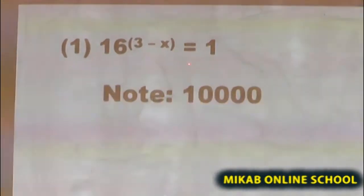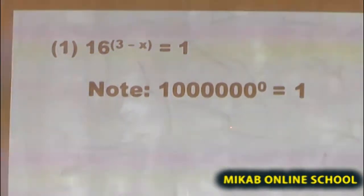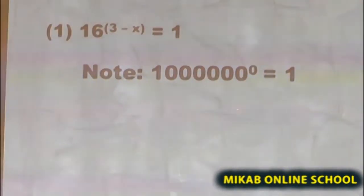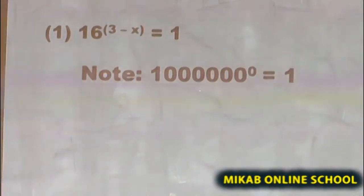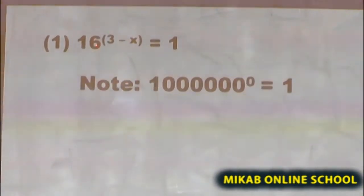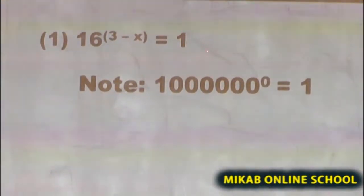The solution of the first question goes thus. 16 raised to the power of (3 minus x) equals 1. Note that from the zero law, any non-zero value raised to the power of 0 gives us 1. If you look at this equation, the base here is 16, and we are having 1 on the right side.